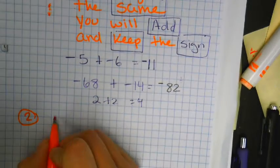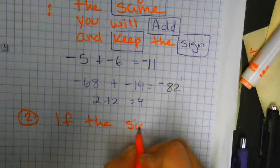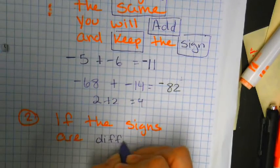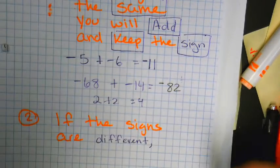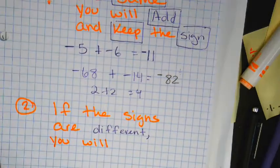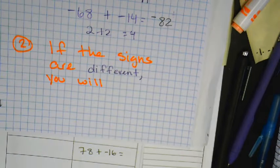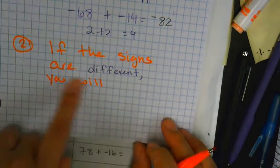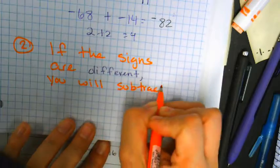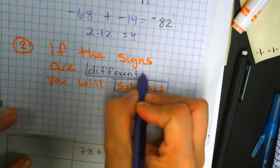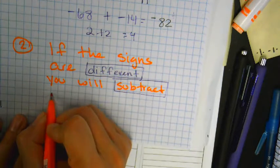Rule number two: if the signs are different — if I have negative 10 plus 5, what do you end up doing mathematically? Subtracting. So if the signs are different, you will subtract.